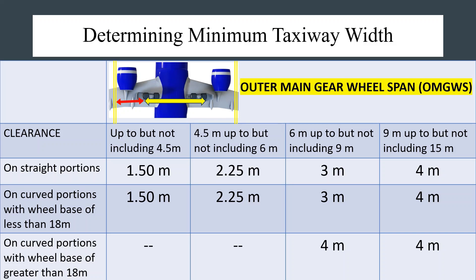For curved portions, you are likely to have 4 meters for areas where the wheel base of the aircraft is greater than 18 meters and the outer main gear wheel span is above 6 meters but including 9 meters. These values are applied on each side of the outer main gear wheel span to obtain the minimum width of the taxiway.